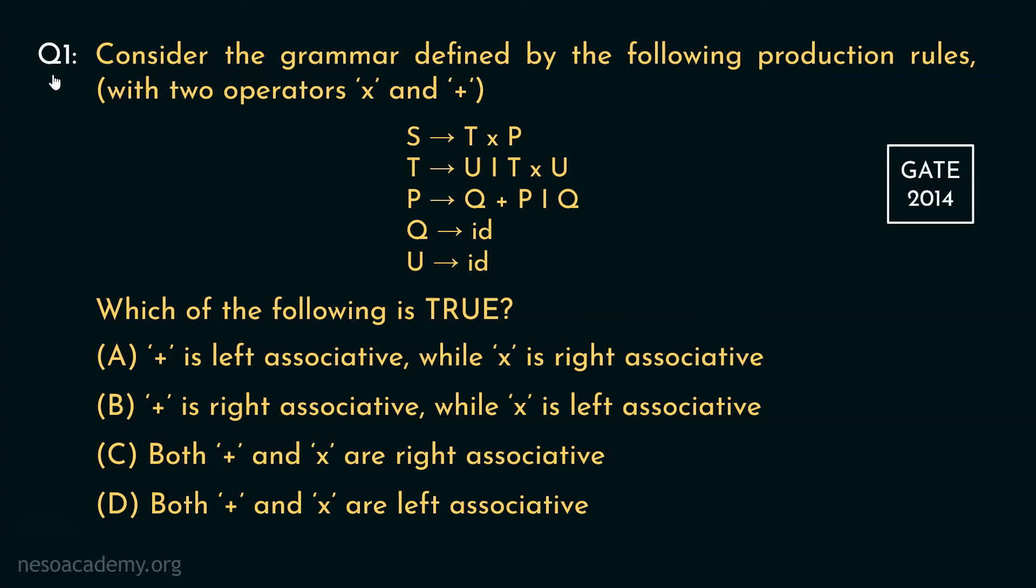Observe the first question. Consider the grammar defined by the following production rules with two operators into and plus. These are the production rules: S can be rewritten as T into P. T can either be rewritten as U or T into U. Then P can be rewritten as Q plus P or Q only. Q or U both can be rewritten as ID.